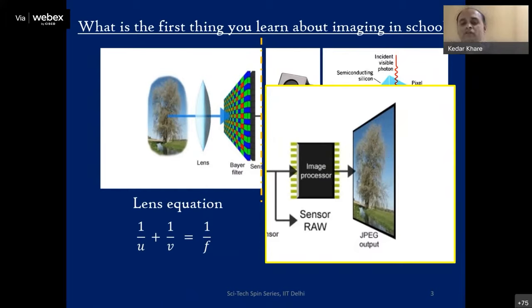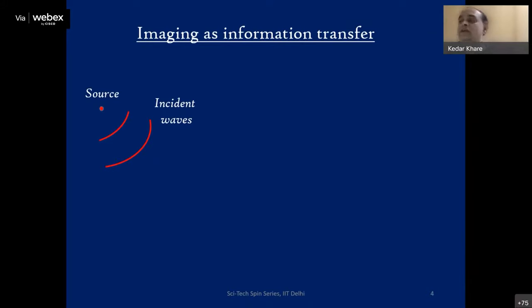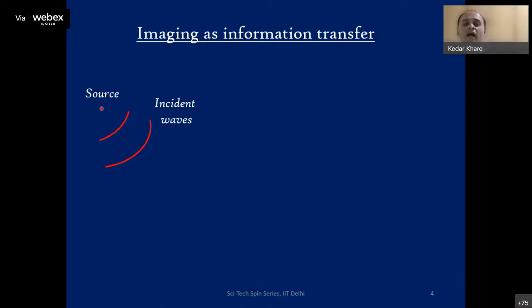Today I want to give you a more advanced perspective about what imaging is all about — imaging as a phenomenon of information transfer rather than just a lens equation. Generally in all kinds of imaging systems, there is some source of radiation. Most of the time it is light or electromagnetic waves, but the source could also be sound waves, as in ultrasound imaging, or electrons, as in an electron microscope.